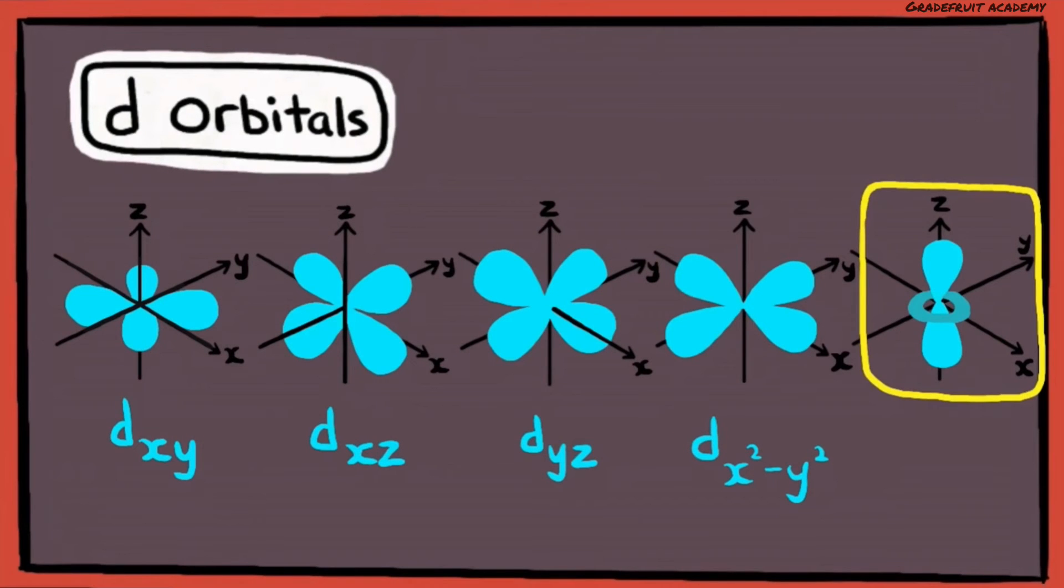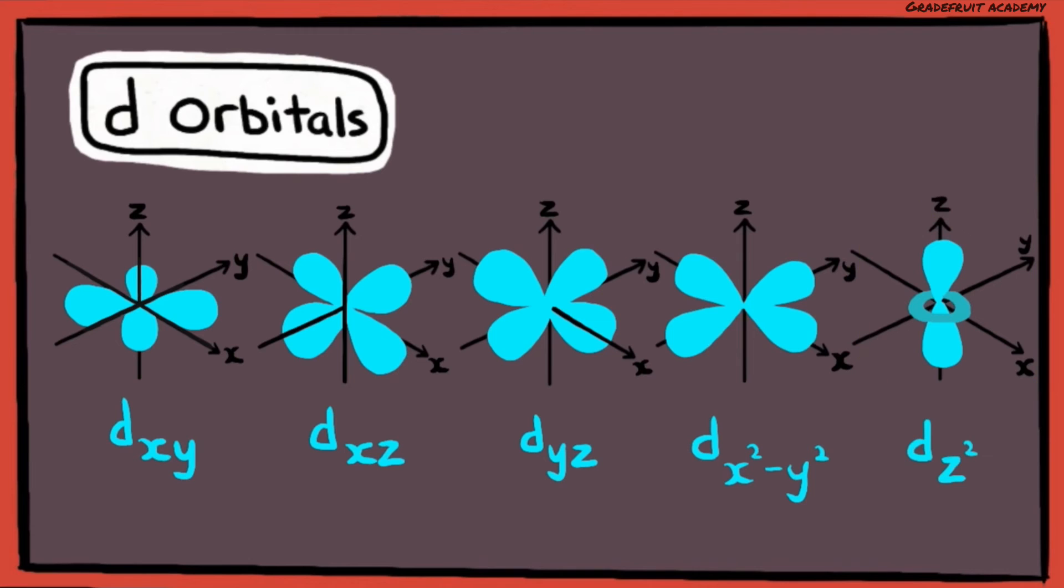The last D orbital is more unique. It consists of a dumbbell surrounded by a small donut-shaped ring at its waist, and the dumbbell lobe is aligned along the Z axis. Hence its name, DZ2.